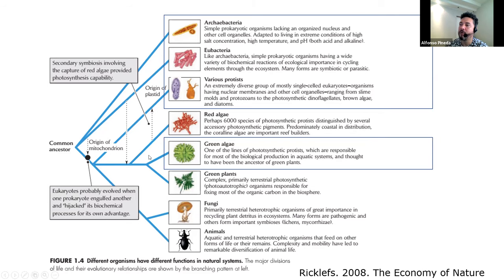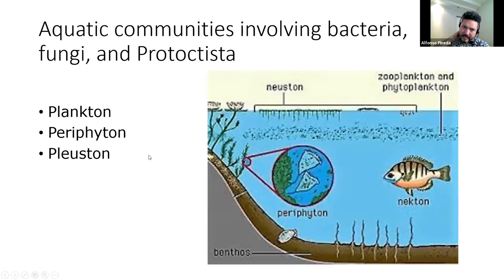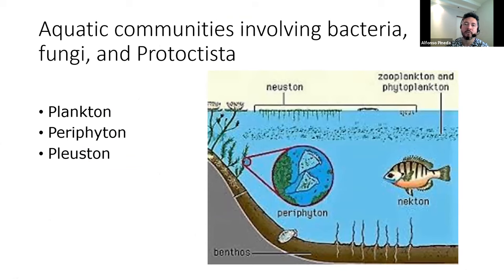Before talking about these organisms, I want to introduce you to the communities that we can find in aquatic ecosystems. It is very important to understand the drivers and the spatial location of these communities. We have three groups: plankton, periphyton, and pleuston.